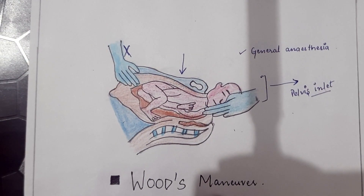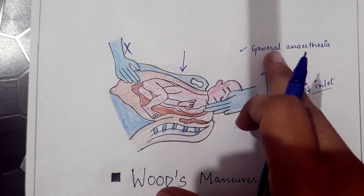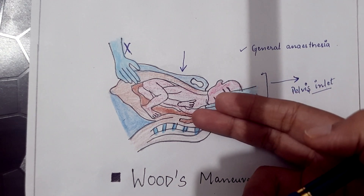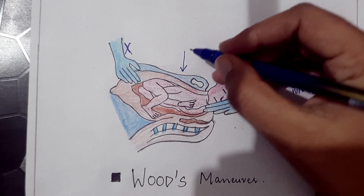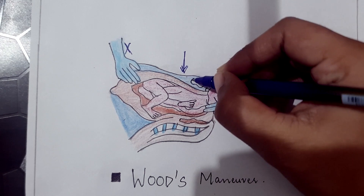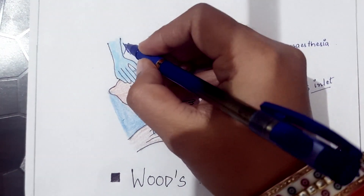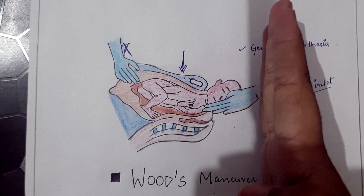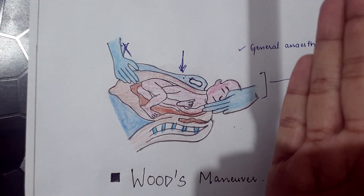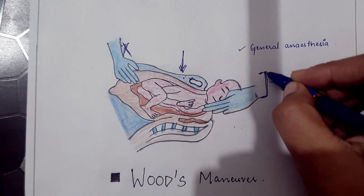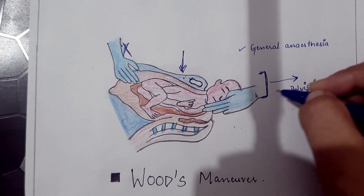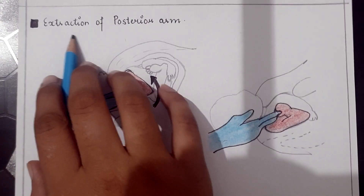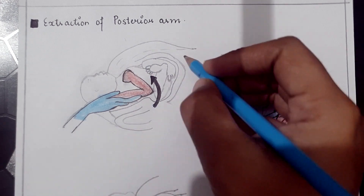Wood's maneuver: before performing this maneuver, administer general anesthesia. Two fingers are inserted into the posterior vagina, and simultaneously pressure is applied to the suprapubic region. With these two fingers, the shoulders are rotated from the anteroposterior diameter to the oblique diameter so that the biacromial diameter enters the pelvic inlet more easily and delivery is achieved.